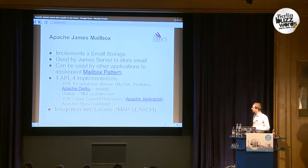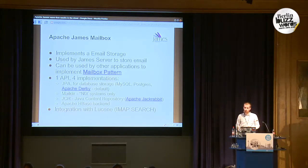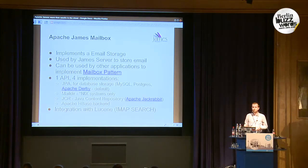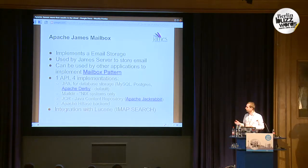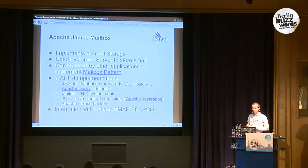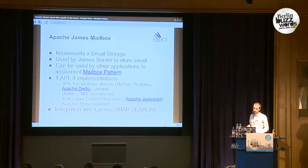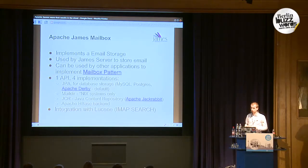The mailbox project aims to provide an API and some implementations you can use in your application to implement the mailbox pattern — basically message delivery and message storage. We have four implementations: a JPA implementation you can use to plug in your database and store emails there; a JCR implementation using Apache Jackrabbit; and an HBase-based backend I developed that lets you store your emails in an HBase cluster. It also has integration with Lucene, so we can index parts of the emails.